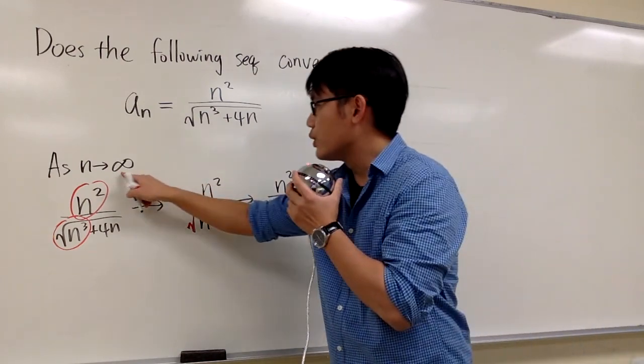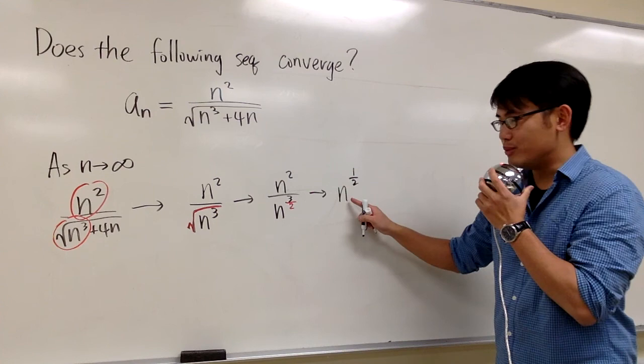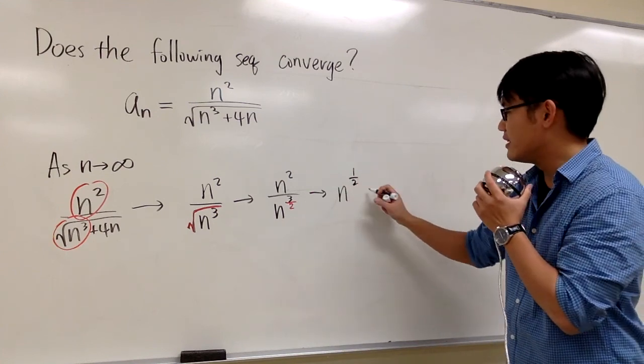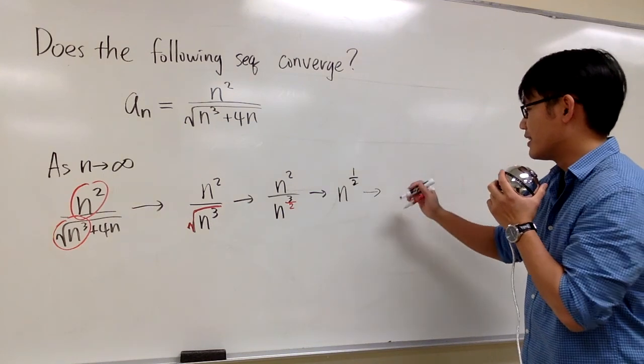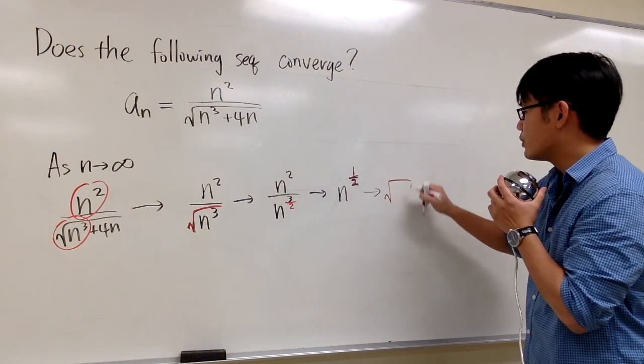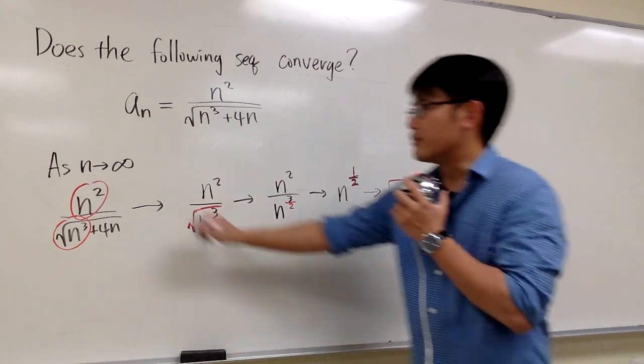As n goes to infinity, and remember, the half power means the square root. The 1/2 power right here is the same as the square root, but n approaches infinity.